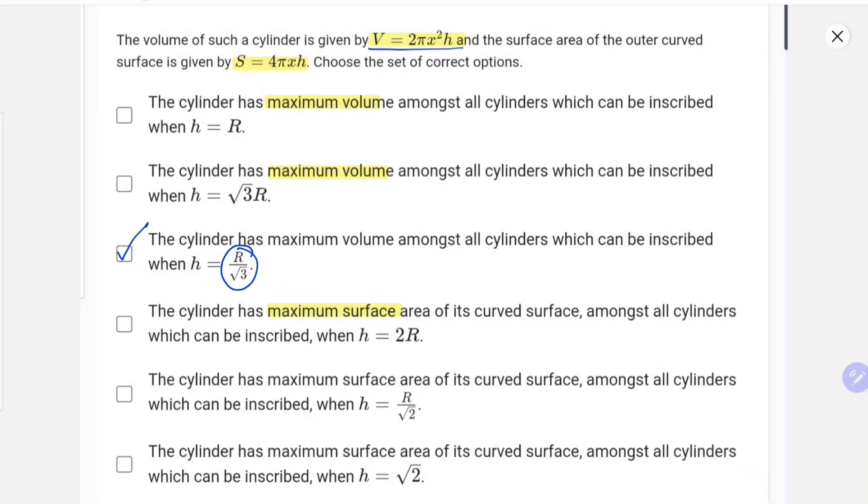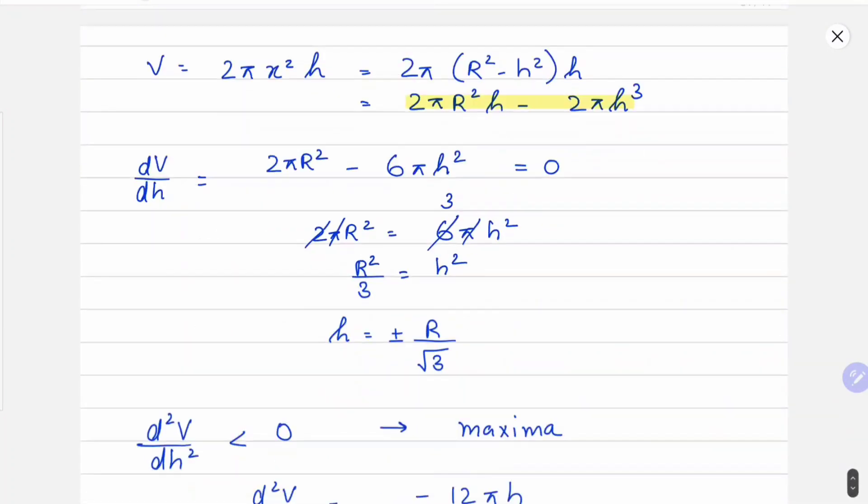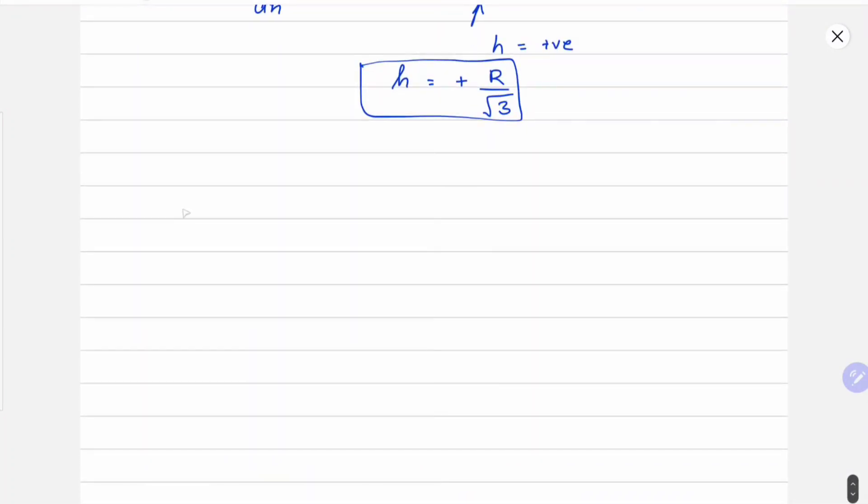Now we have to solve the same for surface area. We will use the same approach. We can write the surface area as 4πxh, and we can replace x with 4πh√(R² - h²).